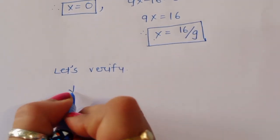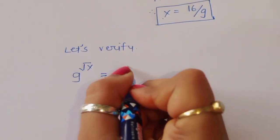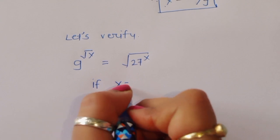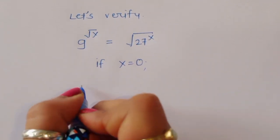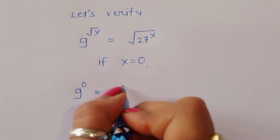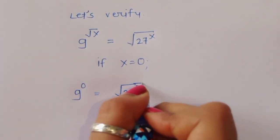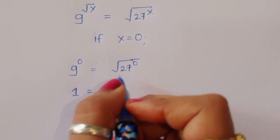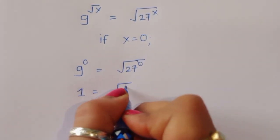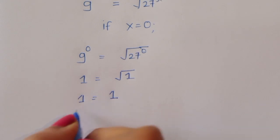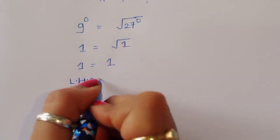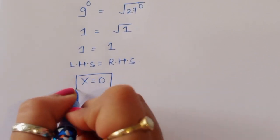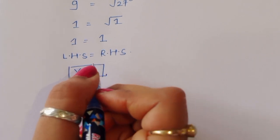Verification for x = 0: the equation is 9^(√x) = √(27^x). Substituting x = 0: 9^(√0) = √(27^0), so 9^0 = √1, which gives 1 = 1. LHS equals RHS, so x = 0 is a correct solution.